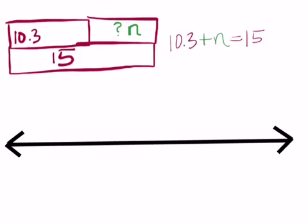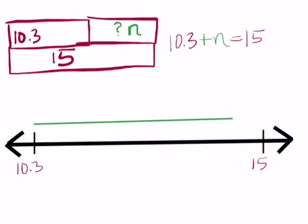So, draw your number line. And, we know that the total is 15. So, our total goes over on the right side. The whole race, the time that it took for Nick to finish that whole race was 15 seconds. And, we know that the first part of the race, everything up until this point over here, took Nick 10.3 seconds. So, now N is going to be the distance from one to another.